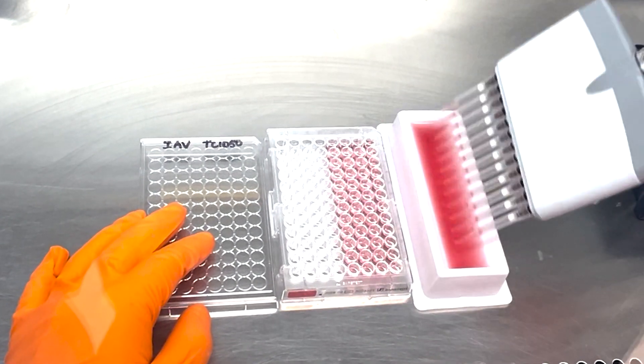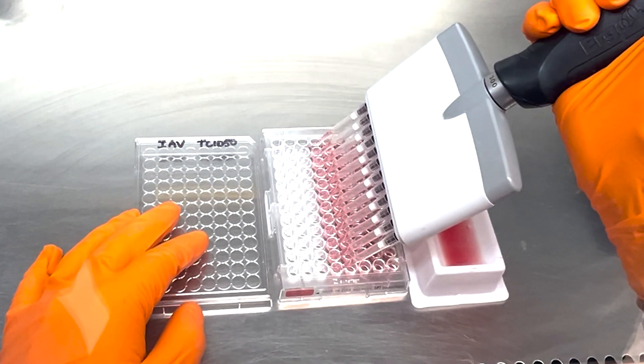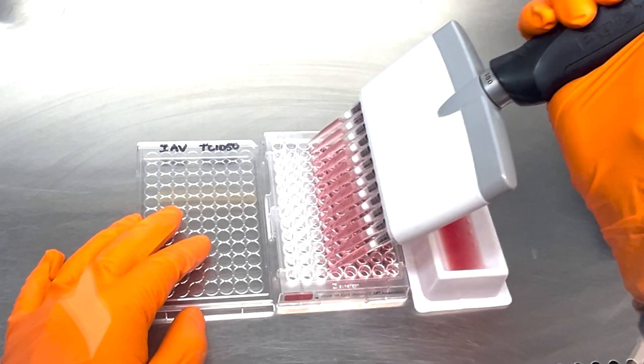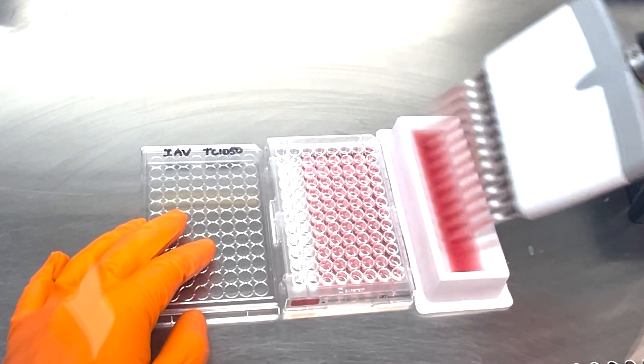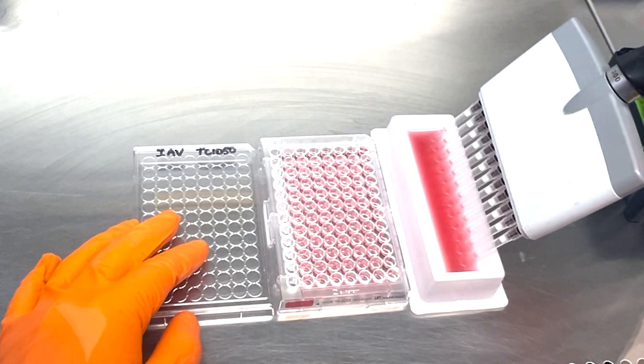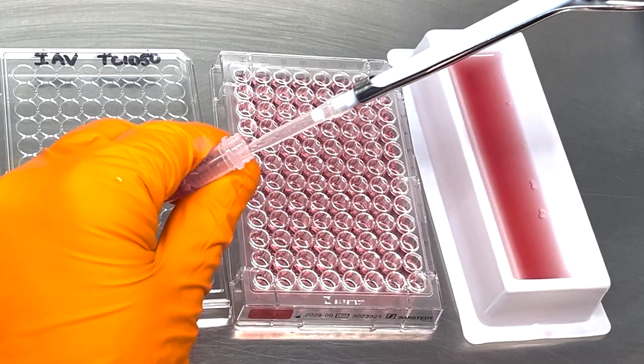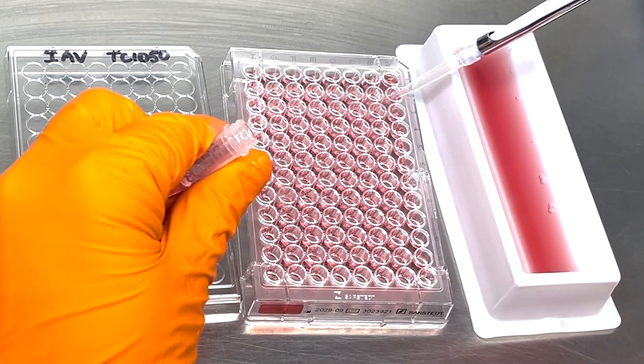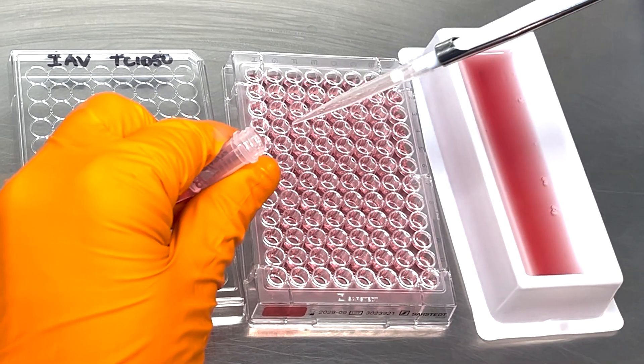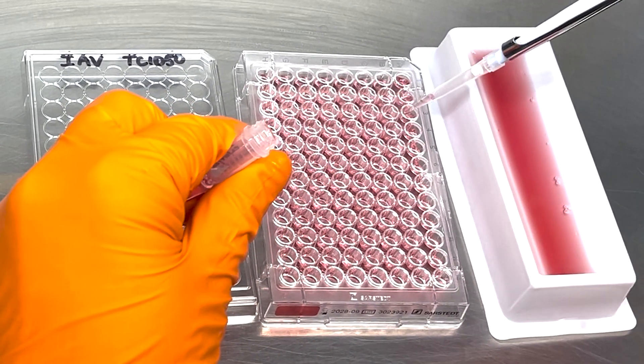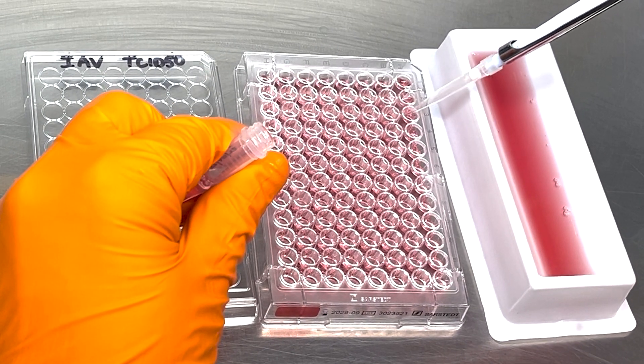First, we need to prepare the virus dilutions on a 96-well plate. We start by adding media to each well. Then, we add the virus to multiple wells in the top row of the plate to create replicates, which is crucial for achieving reliable and reproducible results in our analysis.